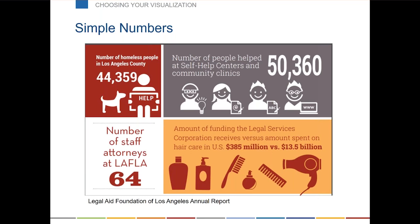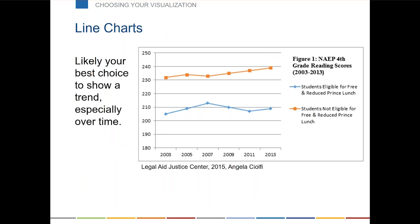Basics like simple numbers have a real place — illustrated numbers, like we saw from the Legal Aid Foundation of Los Angeles dashboard. Line charts: if you have a trend, especially over time, then almost certainly you want a line chart. If things are ordered and you can put the x-axis in order, you should use a line chart. If things are not ordered and you cannot do a line chart, you probably want to use a bar chart — they're usually the best way to do something that isn't a line chart.